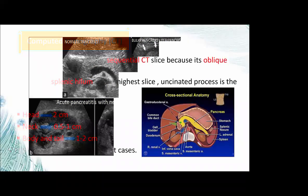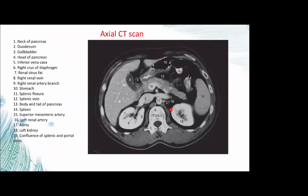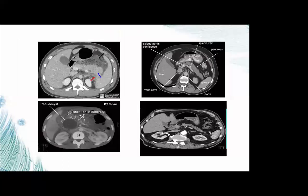On CT: the pancreas must be studied on sequential CT slices because of its oblique orientation. The tail is seen at the splenic hilum on the highest slice, while the uncinate process is the lowest part. The head measures up to 2 cm, and the neck up to 2 cm. The density of the pancreas is similar to the density of the liver. The head, neck, body, and tail lie anterior to the splenic vein and portal-splenic vein confluence.